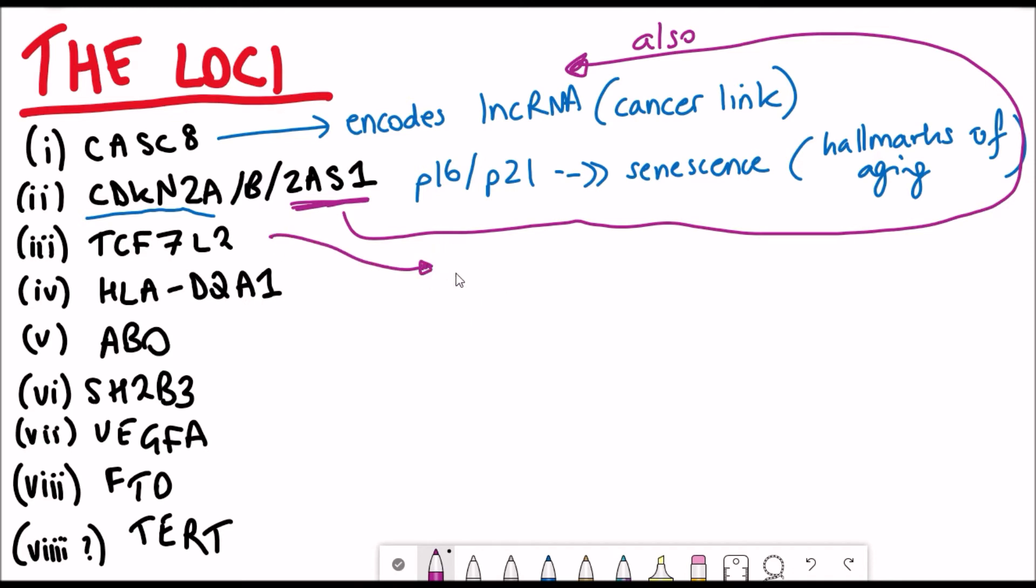So the third one is TCF7L2, which is linked to beta cell proliferation and insulin response. And again, it's got links with cancer and type 2 diabetes.